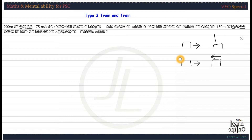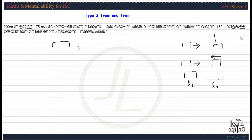When we think of a type 3 problem, we have a train and a plane — or two trains. We have a question: the trains are 200 meters and 1 meter per second, and another train doing 3 meters per second. One train goes in one direction and the second train goes in the opposite direction. One train's speed is 175 meters per second.